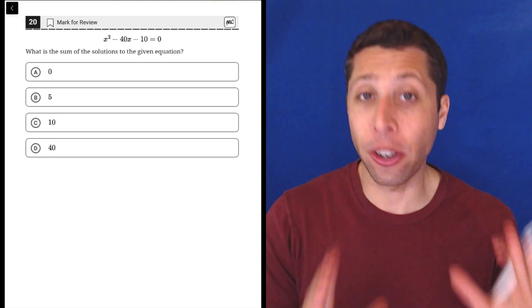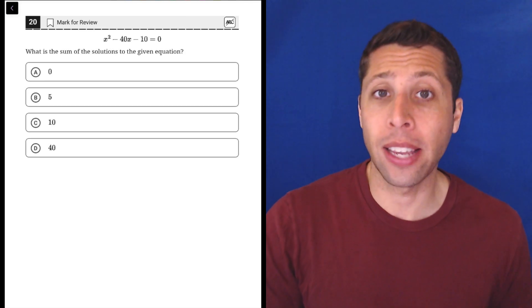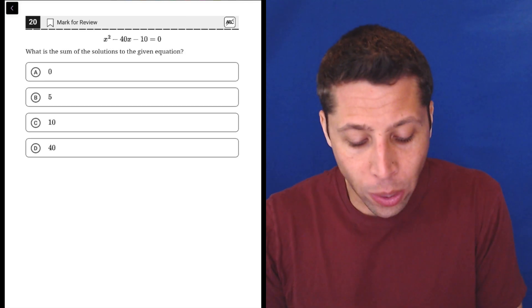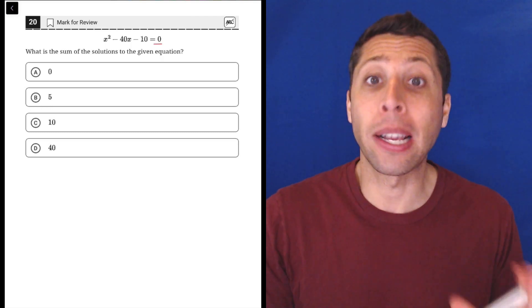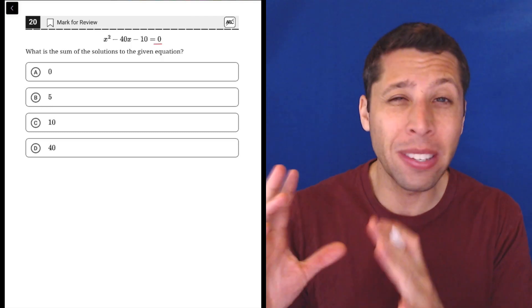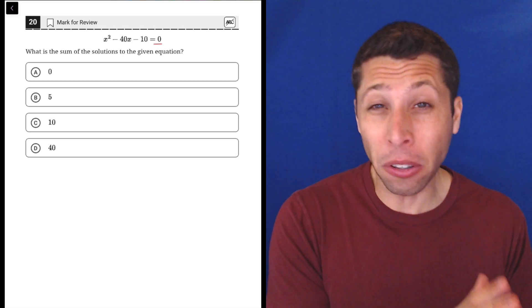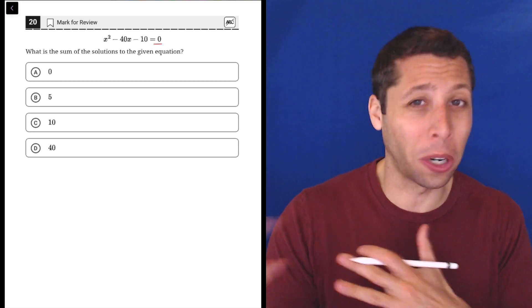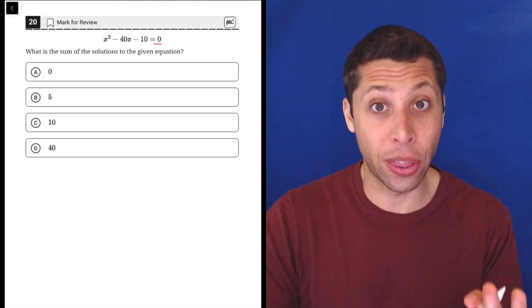The easy way to do this is to recognize that they're giving us a quadratic equation, and when it's equal to zero, it's basically in the best version possible. Whenever we have these x squareds, we really want everything to be equal to zero. It's just kind of how squareds work best in algebra, so this is a good thing for us.